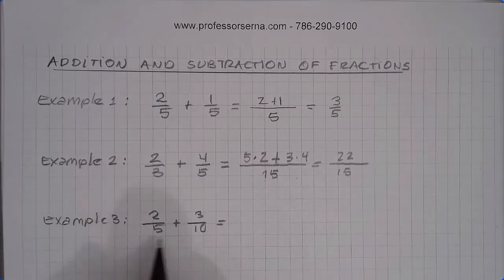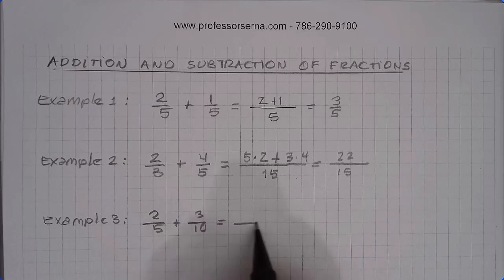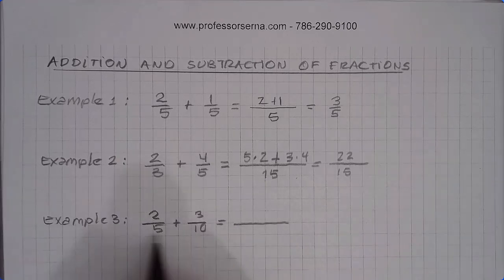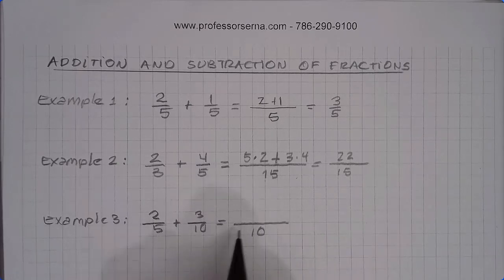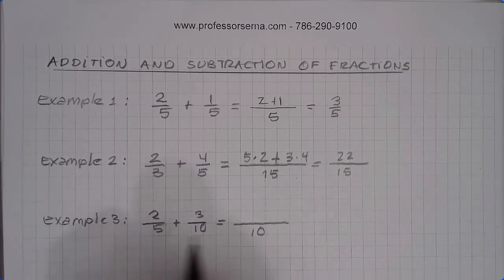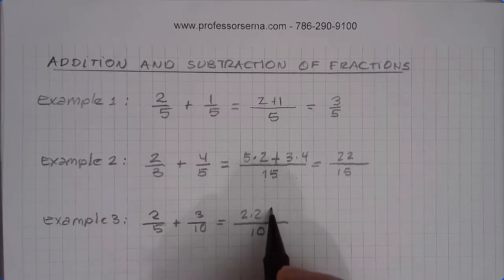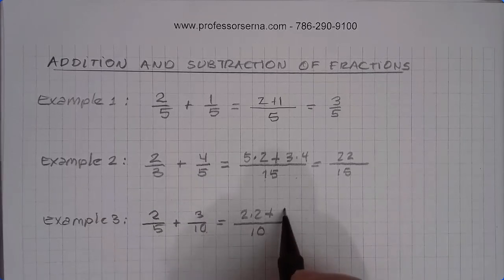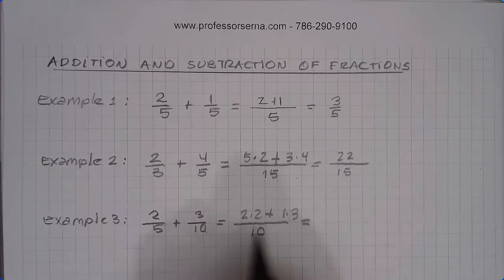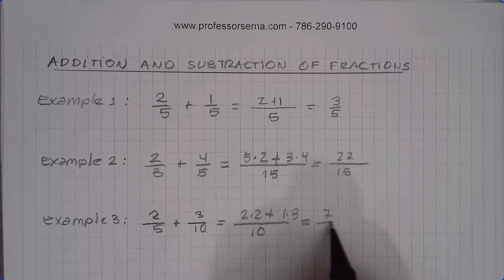If one of the denominators is a multiple of the other, then we already have the smallest number that is a multiple of both. That number is 10. Proceed the same way as before: 10 divided by 5 is 2, times 2; 10 divided by 10 is 1, times 3. So we get 4 plus 3 is 7 over 10.